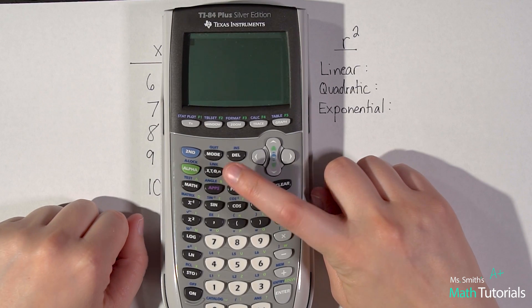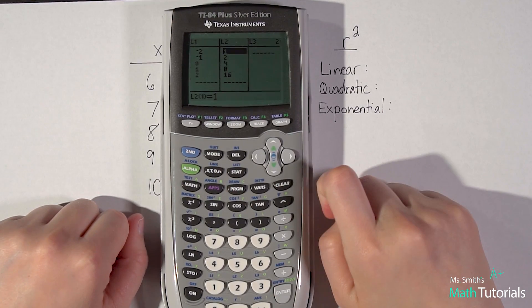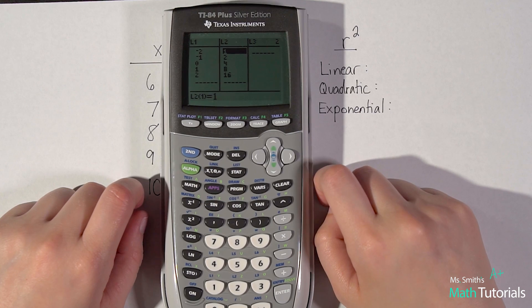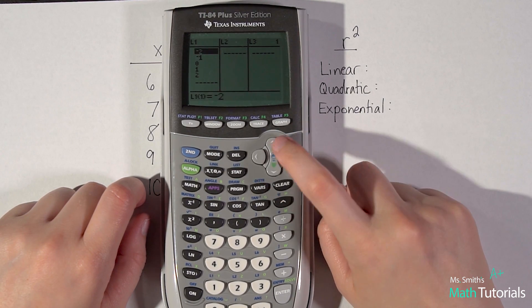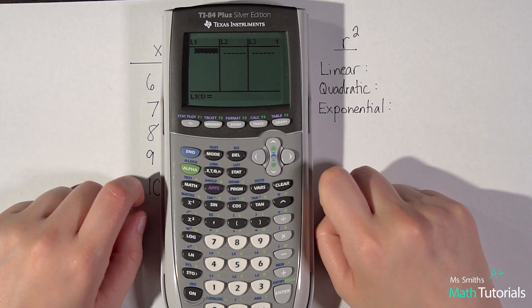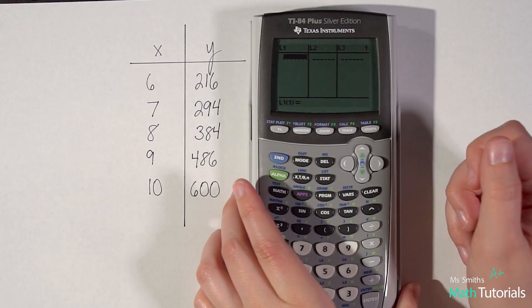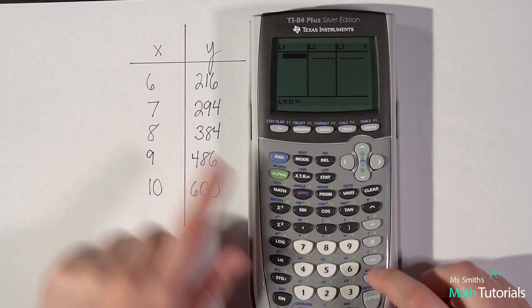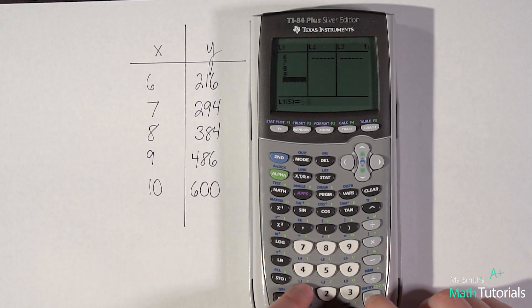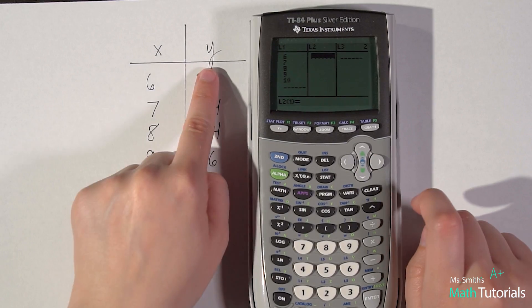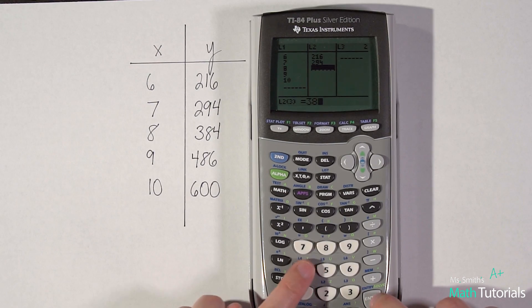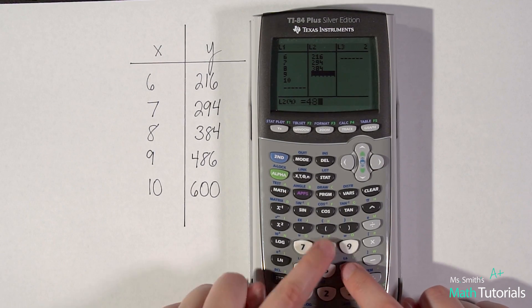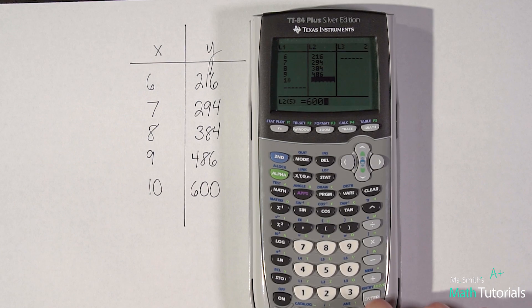I want to go to my stat edit. I have all these lists in here from the last problems on the previous page, just scroll up, clear down, over up, clear down. That's a way to quickly clear those lists. Let's input what we've been given. For my x value, I've got 6, 7, 8, 9, and 10. For my y value, I've got 216, 294, 384, 486, and 600. Make sure they're even, make sure you haven't made any mistakes.